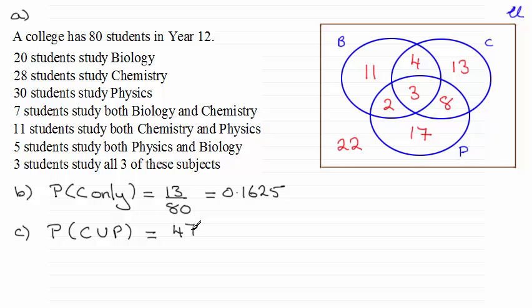So it's going to be 47 out of 80. Or as a decimal, that's 0.5875. Okay?